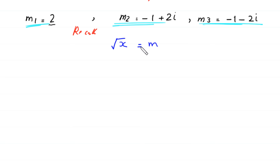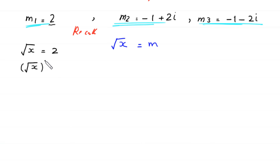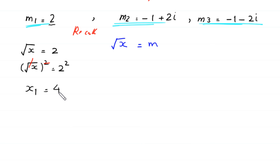Then this equation becomes: square root of x is equal to 2. We take the square of both sides: (square root of x) squared is equal to 2 squared. The square cancels with the square root, and we get x₁ is equal to 2 squared, which is 4. This is the first value of x.